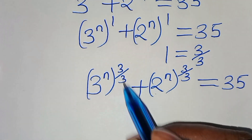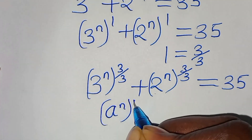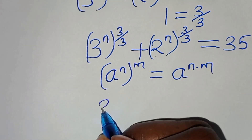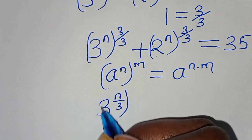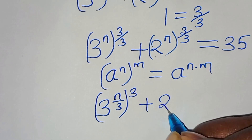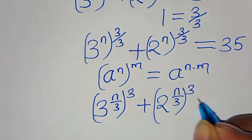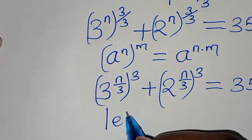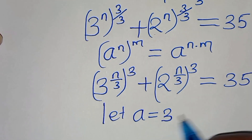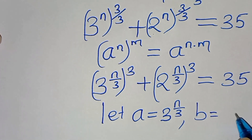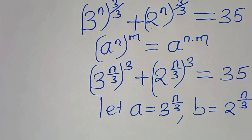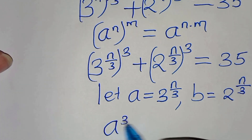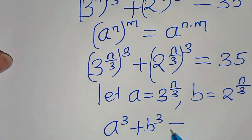Now, applying the exponent property that a to the power of n raised to the power of m equals a to the power of n times m, we have 3 to the power of n over 3, raised to the power of 3, then plus 2 to the power of n over 3, raised to the power of 3, this is equal to 35. We can let a equal to 3 to the power of n over 3, and let b equal to 2 to the power of n over 3, so substituting a and b we get a to the power of 3 plus b to the power of 3, this is equal to 35.